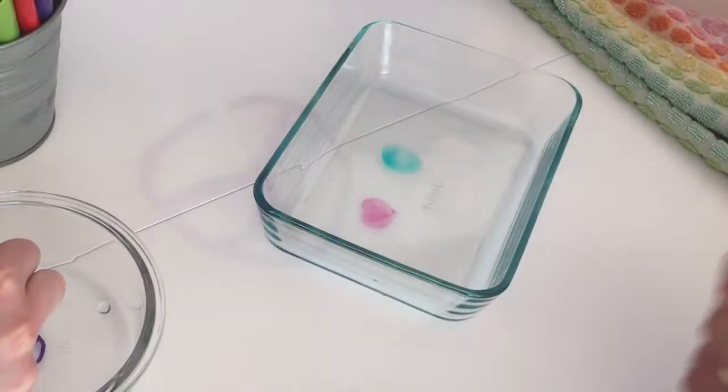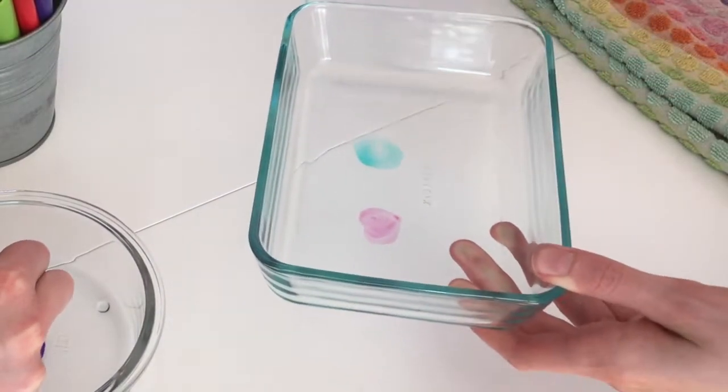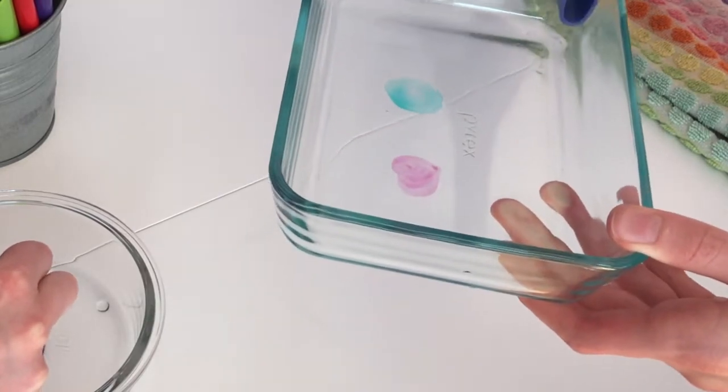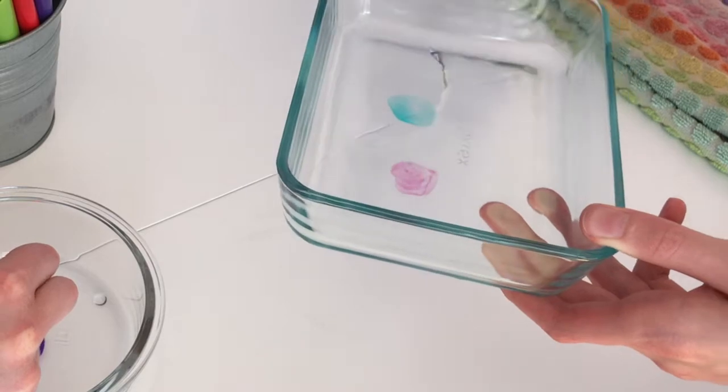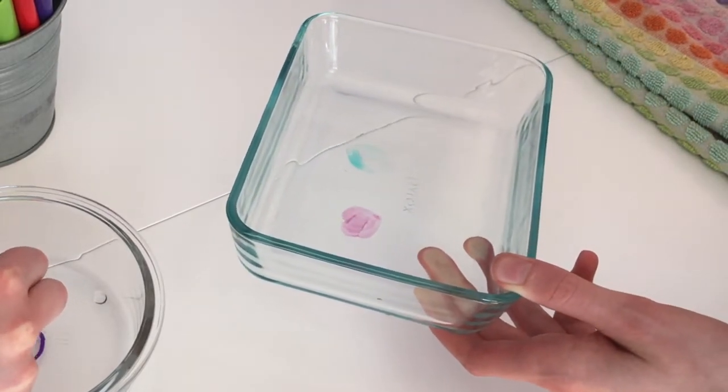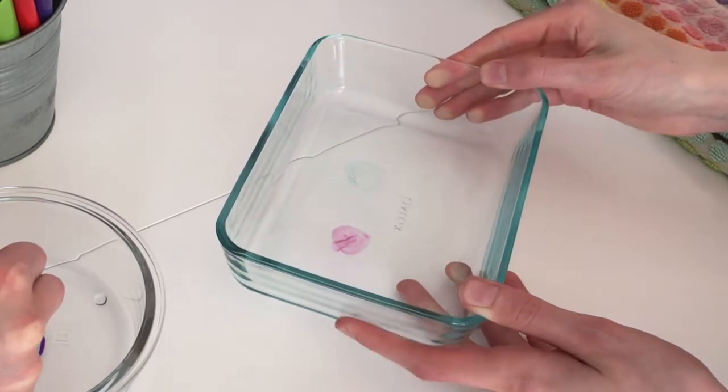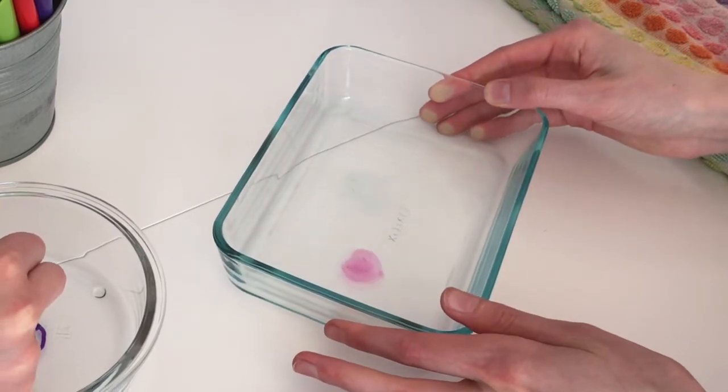Well when you draw with a dry erase marker, two things are left behind. One is the pigment or the color of the marker, in this case it's green and then the purple one behind it. You're also leaving behind some alcohol. So when you add the water, the alcohol dissolves leaving the pigment as a solid on the bottom of the glass.